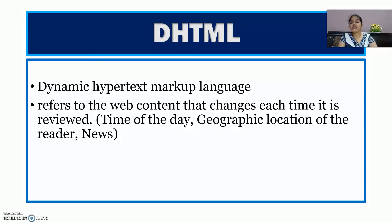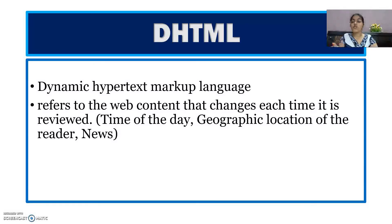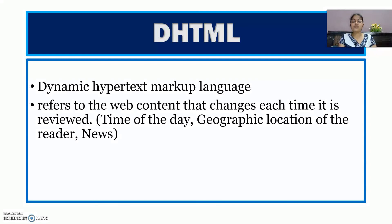Next is DHTML, which stands for Dynamic Hypertext Markup Language. Dynamic means the content changes over time — there are static websites where content remains fixed, and DHTML websites where content changes from time to time. For example, if you want to check share market rates or Sensex, those use DHTML websites. Similarly, if a website shows the current time or breaking news, the content changes every time you open it. Websites where content keeps changing are built using DHTML.